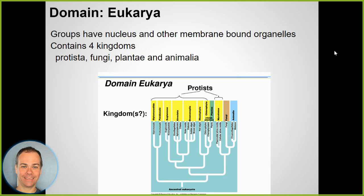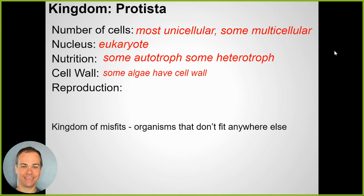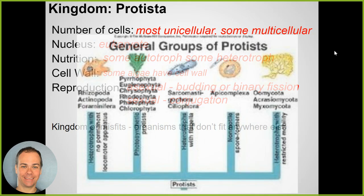Protists - you looked at protists back in seventh grade, looking at amoeba and paramecium under the microscope. Those are tiny single-celled organisms that generally live in water. They're aquatic, mostly unicellular, and eukaryotes - they do have a nucleus. Some are autotrophs, some are heterotrophs, and some are both. A euglena has chloroplasts and can make its own food, but it can also consume organisms for energy.